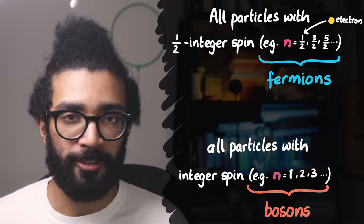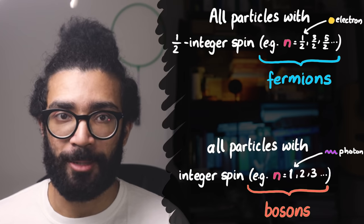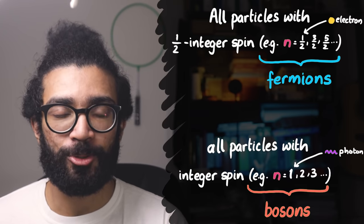An electron, therefore, is an example of a fermion, and a photon is a type of boson. If you don't know about these two classes of particle, then please do check out this video I made a little while ago, talking about them in more detail.